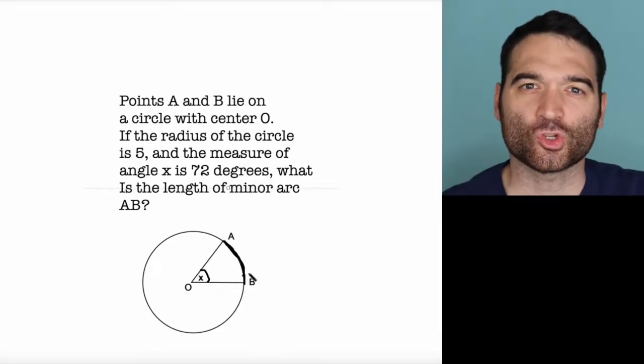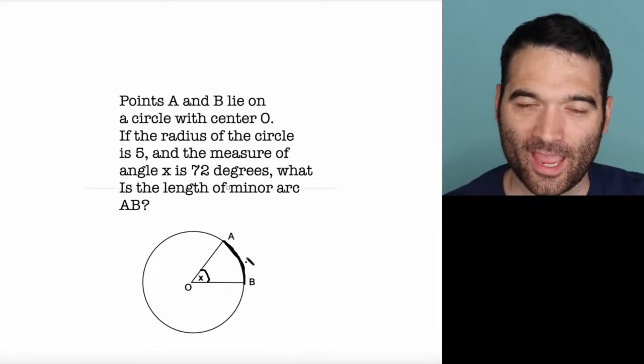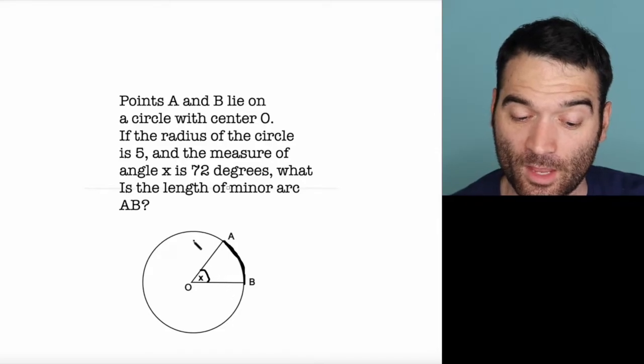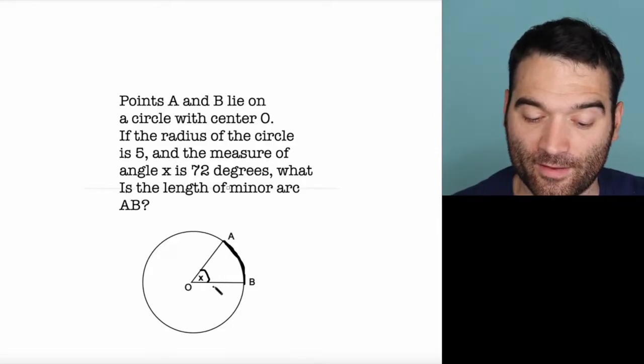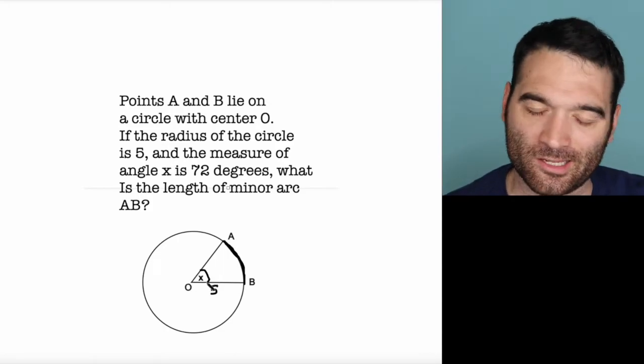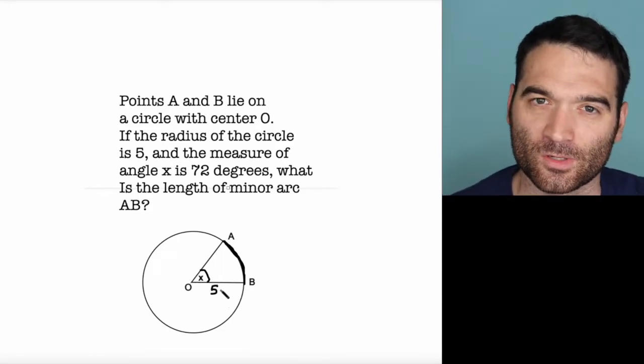This is a circle ratios question, and it's actually very straightforward. We're told that the radius of the circle is 5. I'm going to label that right now. From O to B or O to A, it doesn't matter. The radius of the circle is 5.